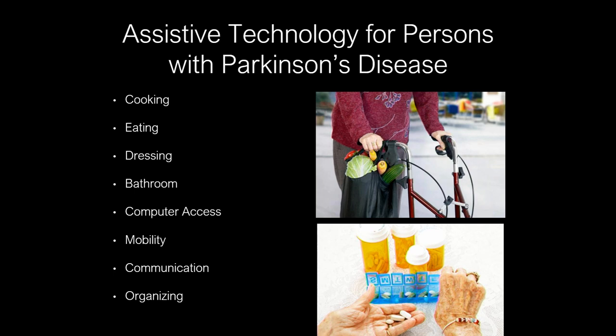Communication could be talking about how we might access our phone differently. For folks who have more progressed features of the disease, maybe a device that speaks for them. And then technology to help with organizing — things with the computer, iPads, phones, things of that nature might be useful.